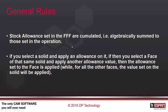Let's go back to the presentation and review some general rules of stock allowance. The first rule is that the values you set in the freeform feature are algebraically summed to those set in the operation. So for example, if for the solid I set minus 0.1 but then in the operation I set plus 0.1, the result is 0 — meaning no allowance.